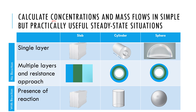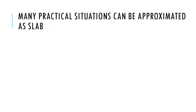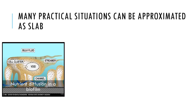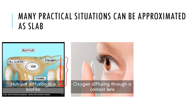We want to find concentrations and mass flows in simple but practically useful steady-state situations, starting with a slab and without any reaction. We care about this because many practical situations can be approximated as a slab. For example, in a biofilm, the growth of bacteria at the bottom depends on how nutrients diffuse through it, so we want to know how diffusion depends on diffusivity and thickness.